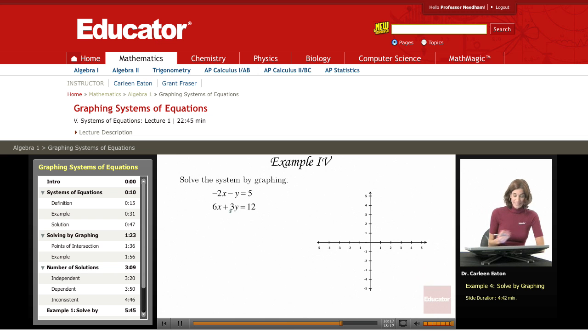As usual, I need to find some points, starting out with the top equation, minus 2x minus y equals 5. I'm going to go ahead and let x equals 0, so I'll find the y-intercept. Negative 2 times 0 minus y equals 5, negative y equals 5. Go ahead and multiply both sides by negative 1, and I'm going to find that y equals negative 5.